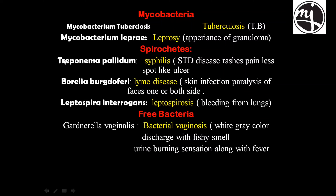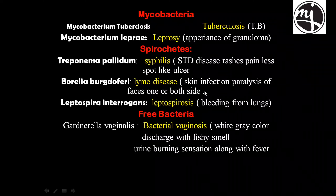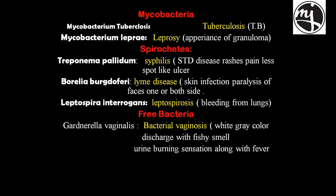Spirochetes bacteria: Treponema pallidum causes syphilis, a sexually transmitted disease with painless ulcers, rashes, or spots on the body. Borrelia burgdorferi causes Lyme disease — a skin infection with possible facial paralysis on one or both sides.